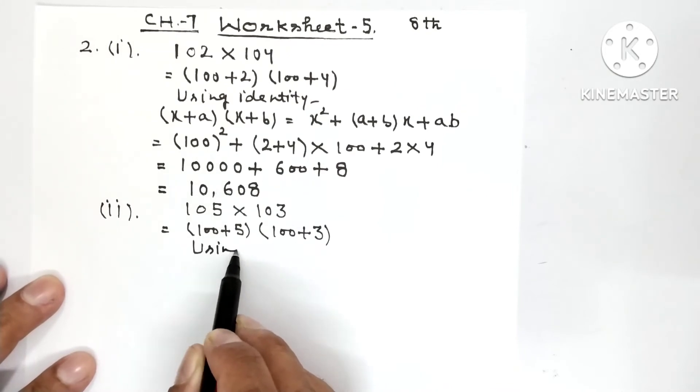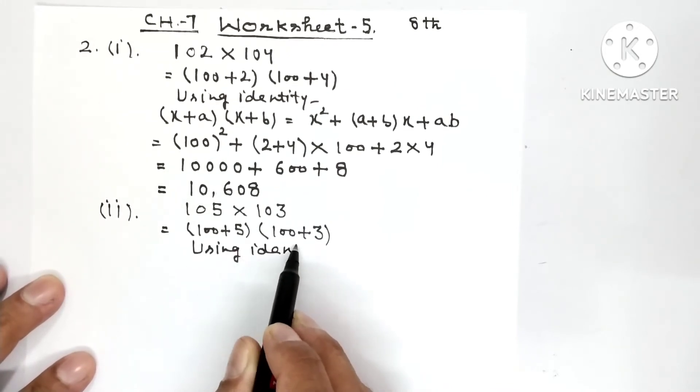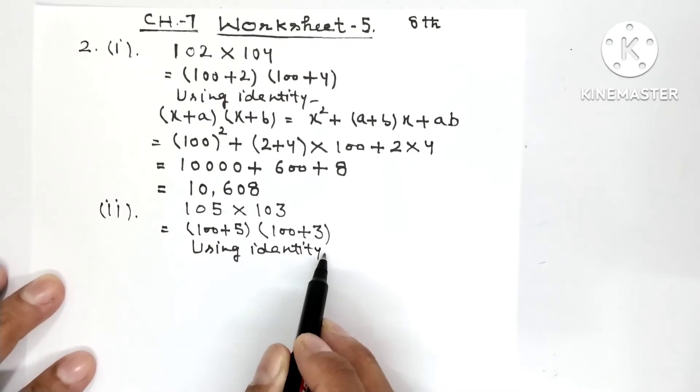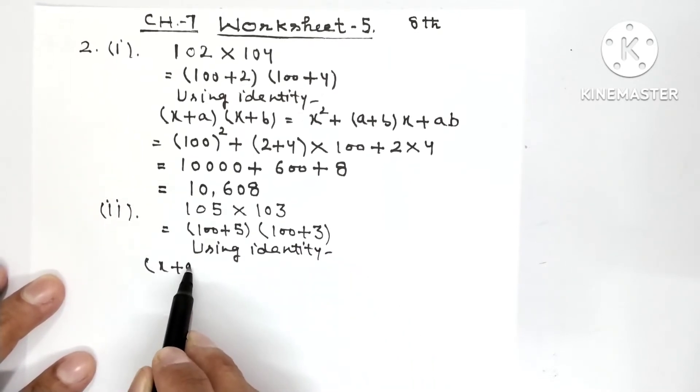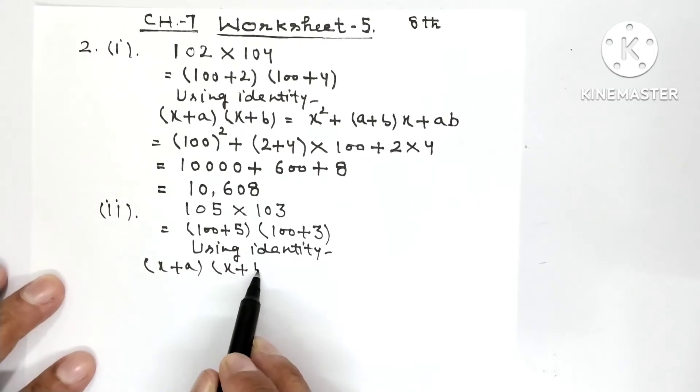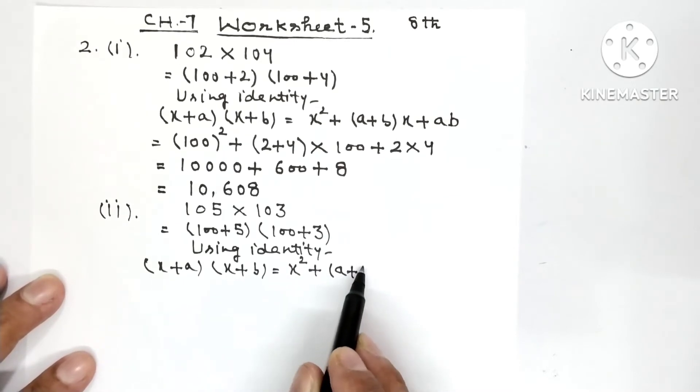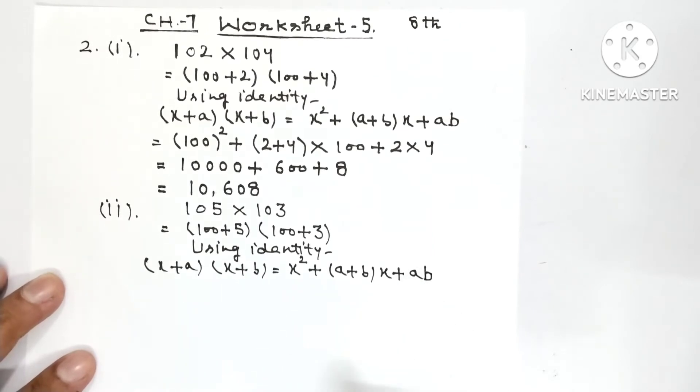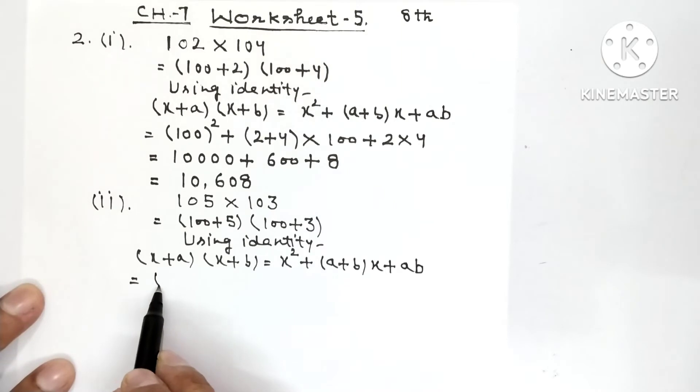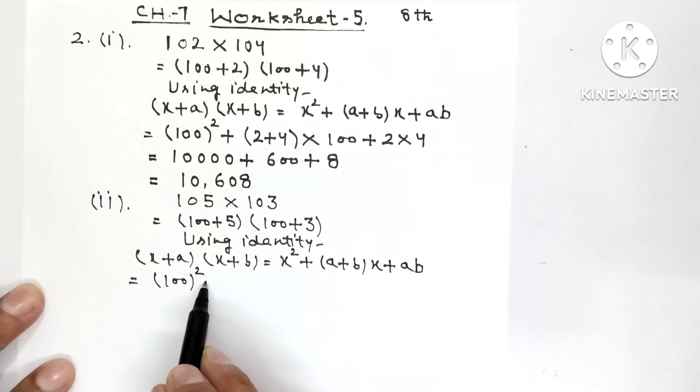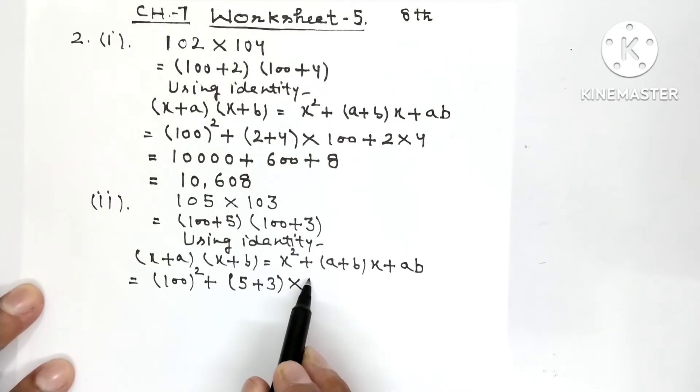Using identity (x + a)(x + b), it is equal to x² plus (a + b)x plus ab. So 100 whole square plus 5 plus 3 in one bracket into 100, because you have done a plus b into x.